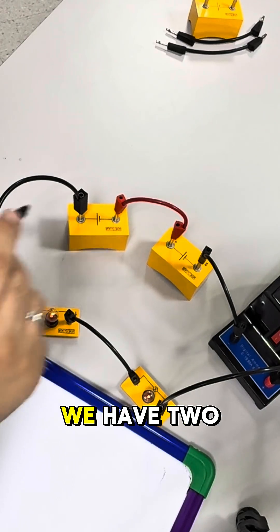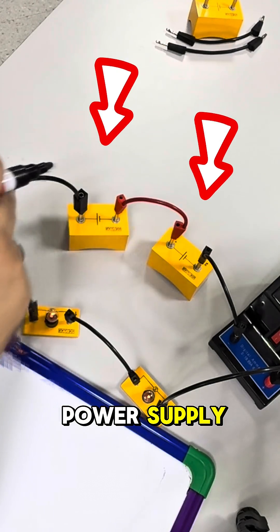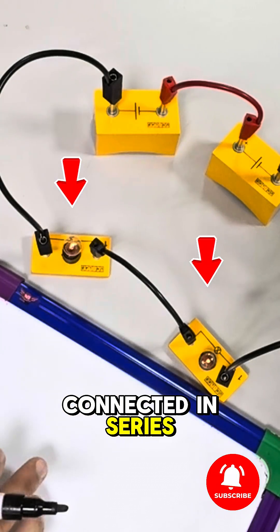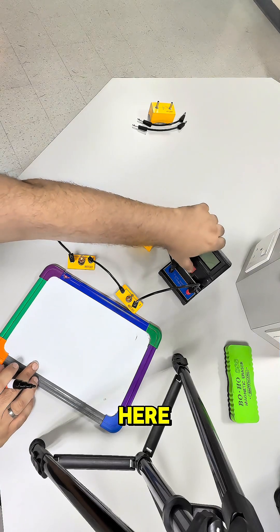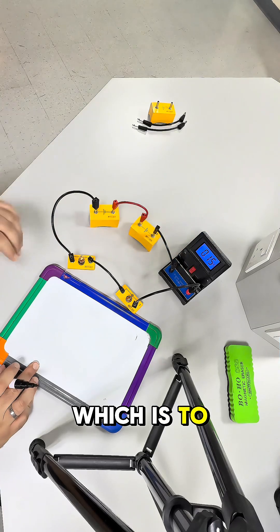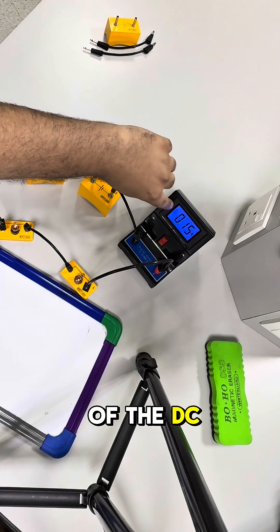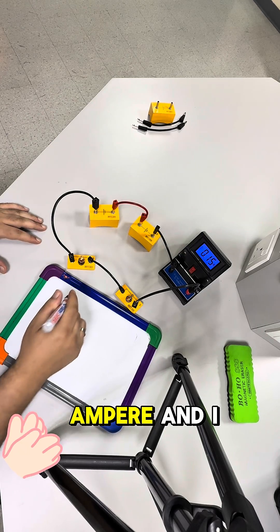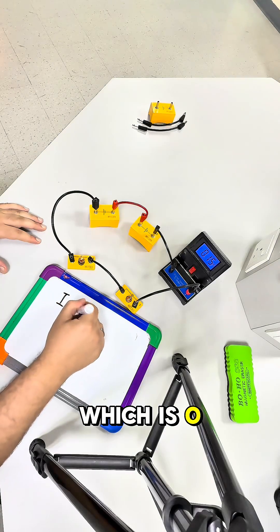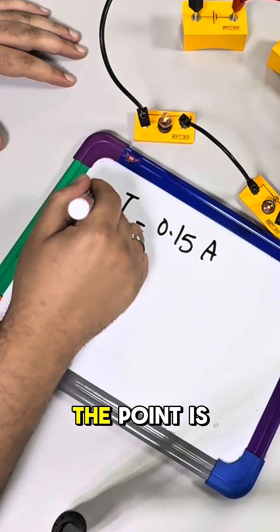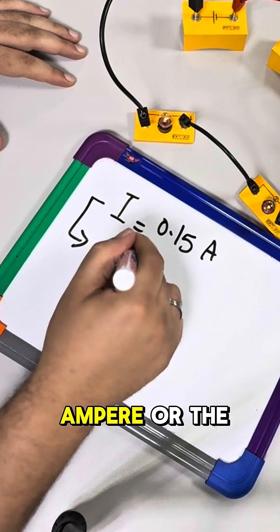In this electric circuit we have two power supplies or two batteries and two lamps connected in series. My point here is to check how much is the reading of the DC, which is the electric current in ampere, and I get 0.15 ampere. What does it mean? The point is what's meant by ampere or the electric current: I equals Q over T.